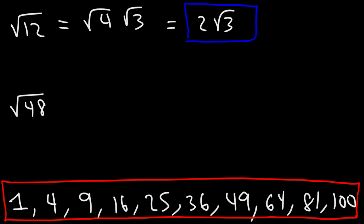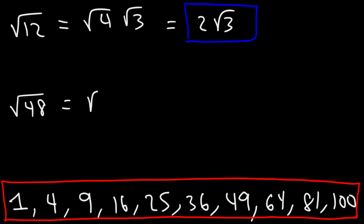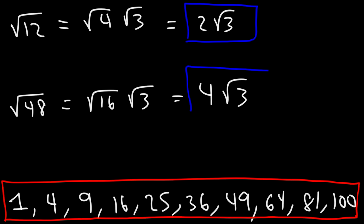What perfect squares go into 48? 48 is divisible by both 4 and 16. When you have multiple perfect squares, pick the highest one — in this case 16. 48 divided by 16 is 3, so we write 48 as 16 times 3. The square root of 16 is 4, so the answer is 4√3.